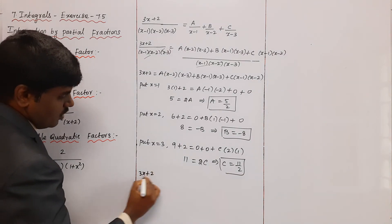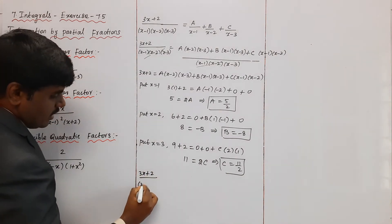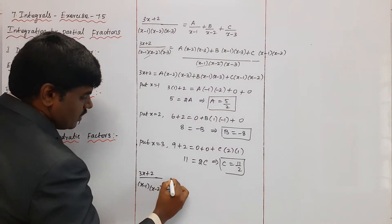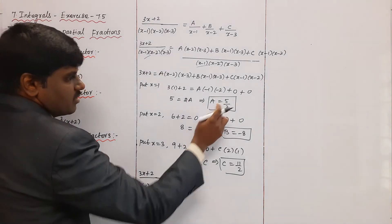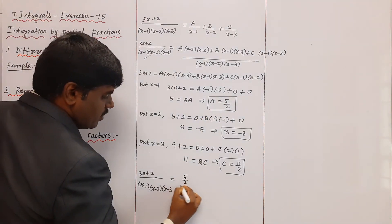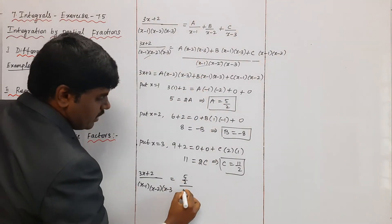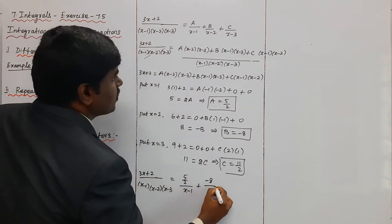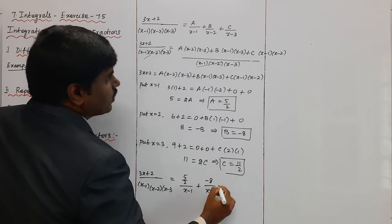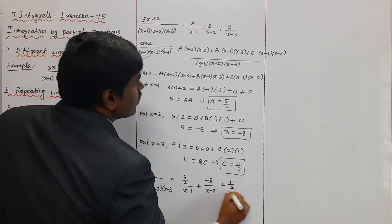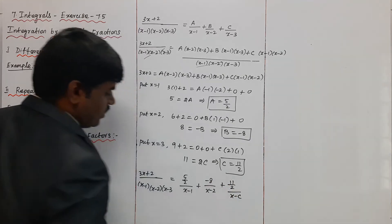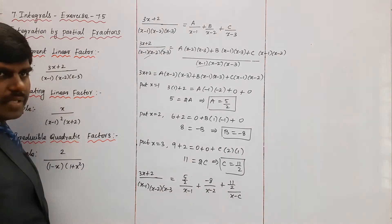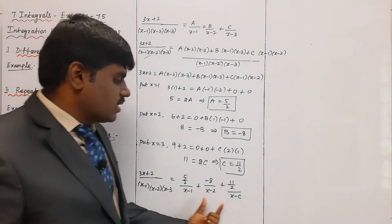So the conclusions are: A = 5/2, B = −8, C = 11/2. Therefore the given problem (3x + 2)/[(x−1)(x−2)(x−3)] equals (5/2)/(x−1) + (−8)/(x−2) + (11/2)/(x−3). This is how we convert a rational function into partial fractions.